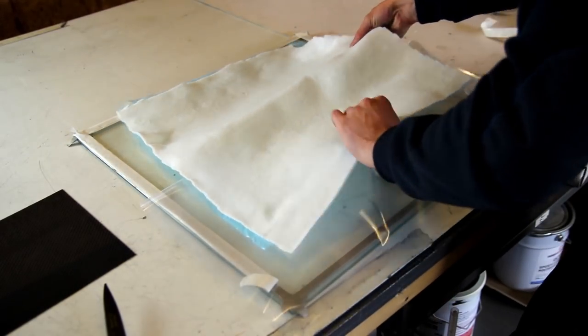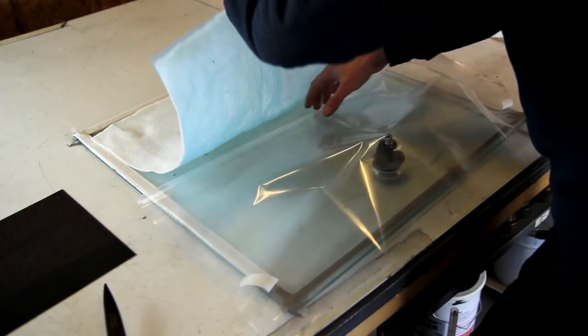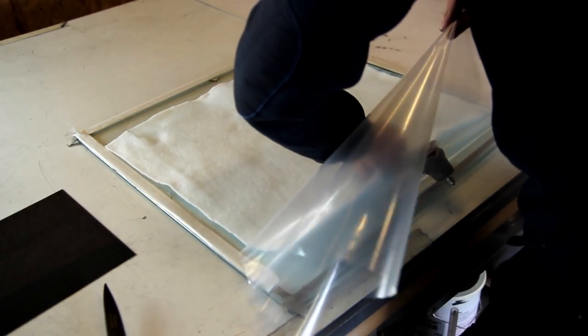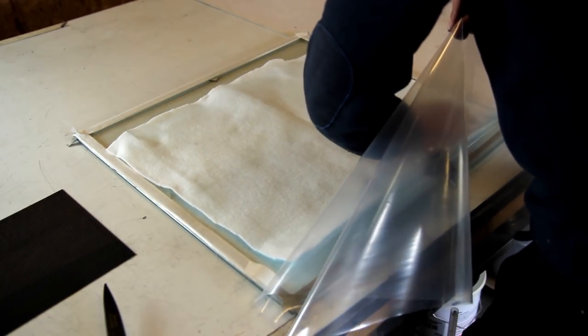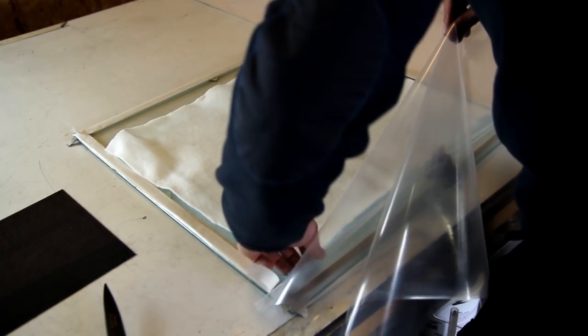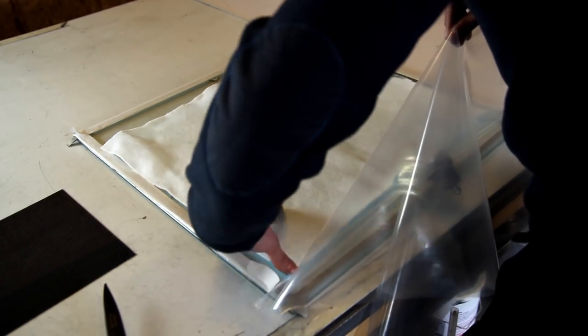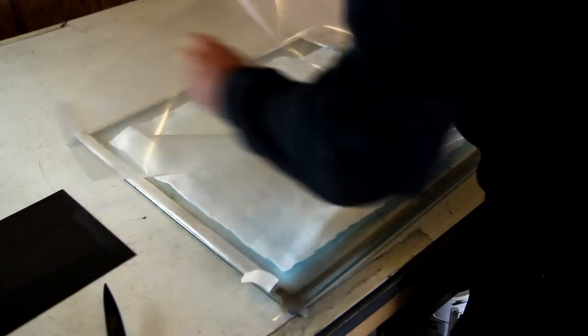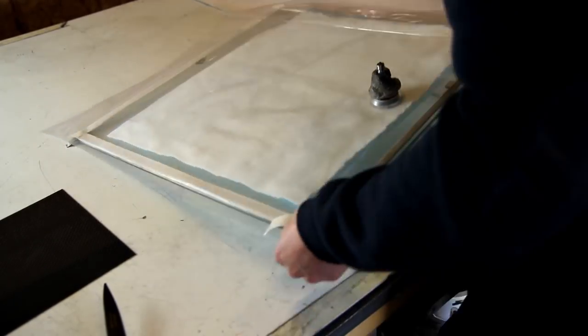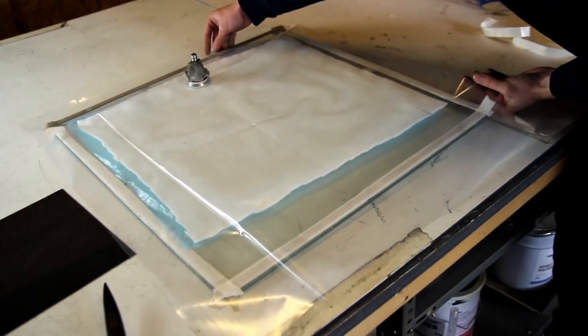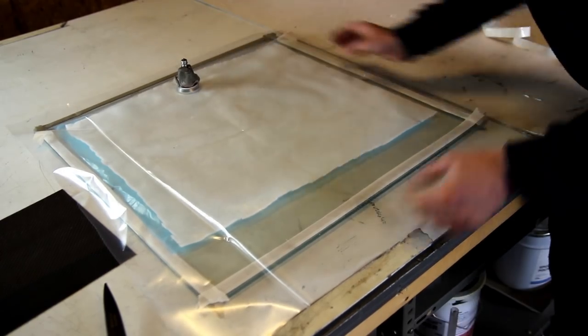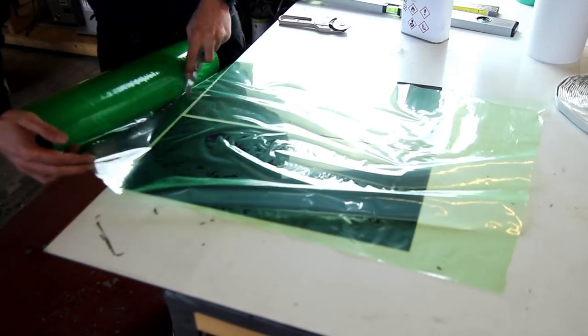And then I'm just preparing the stack with the breather, also called bleeder in some books or sometimes online. And you have a perforated release film under it, so you have small little holes into that film and the excess resin can be sucked through, or the air that's still left under it.